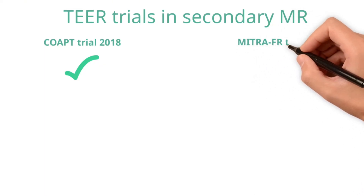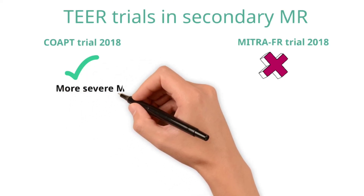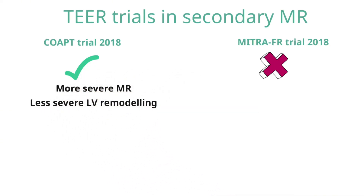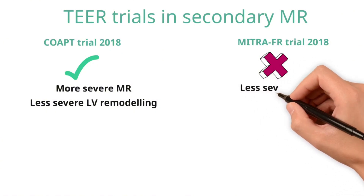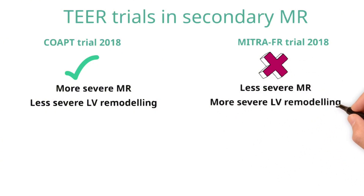In contrast, the Mitra FR trial showed no difference in mortality. This was seemingly confusing, but is likely explained by the fact that the COAPT trial had patients with relatively more severe mitral regurgitation and less left ventricular dilatation and remodelling, whereas the Mitra FR trial included patients with relatively less severe mitral regurgitation but more severe left ventricular remodelling, therefore indicating that their symptoms were more likely to be from advanced LV failure rather than mitral regurgitation. Hence, they derived less benefit from mitral valve intervention.